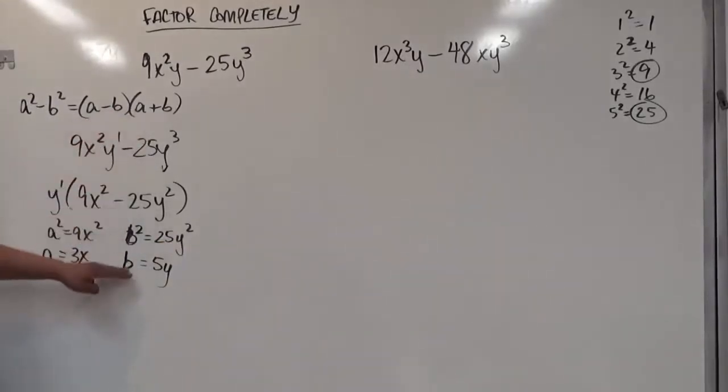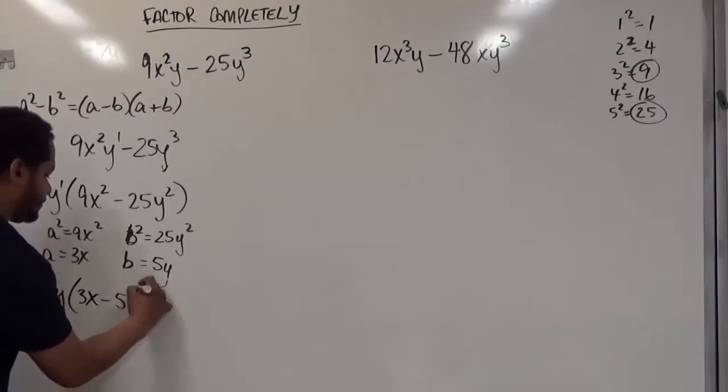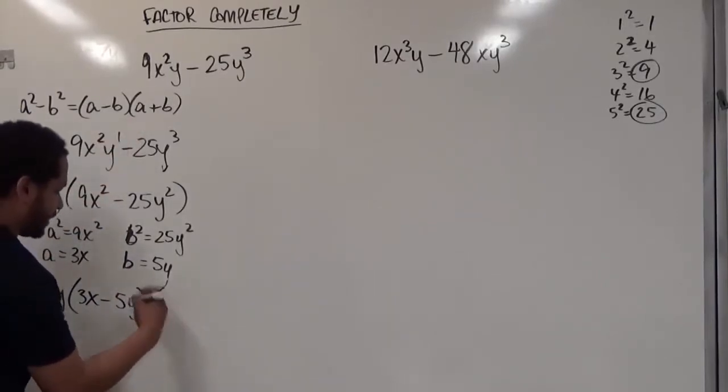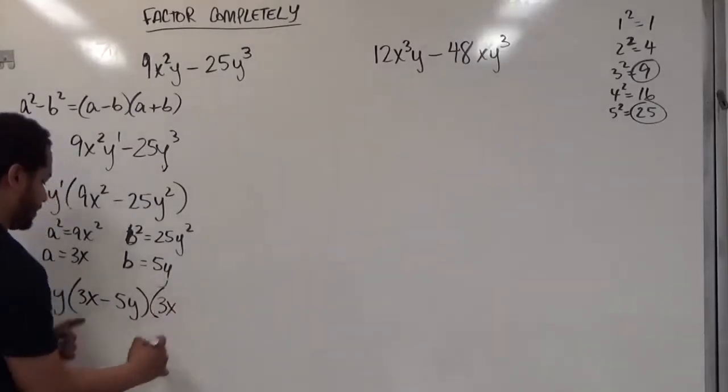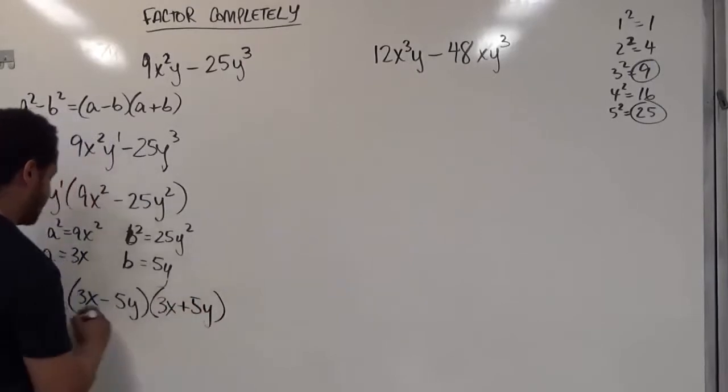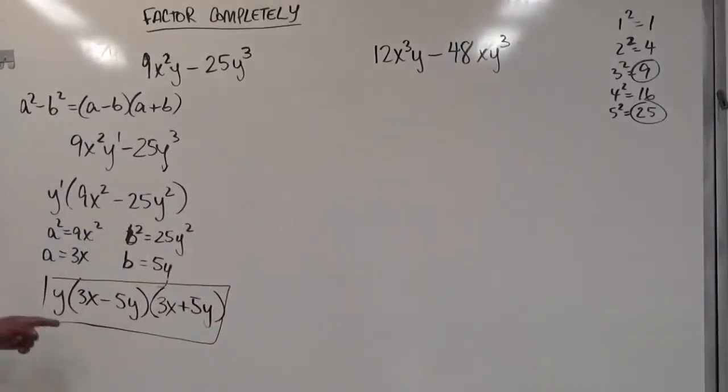I'm going to use this formula to break this down based on my a and my b value, considering there's a y outside. So I have y, my a term is 3x, I have a minus symbol, my b term is 5y. I move on to my next set of parentheses where I have a plus b. So it's the same two values of 3x and 5y, and I just need a sum between them. That takes care of factoring completely my first piece of this problem.